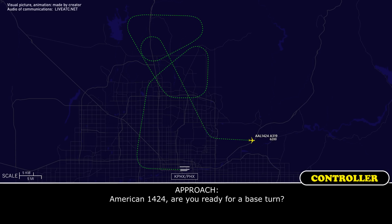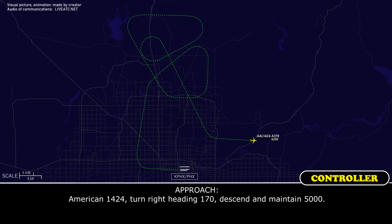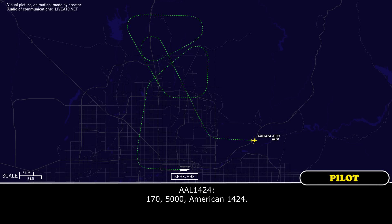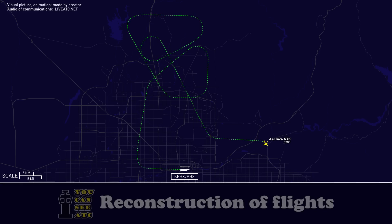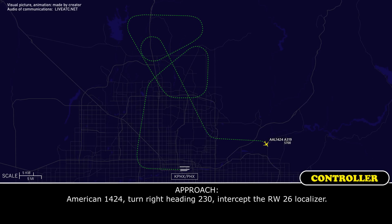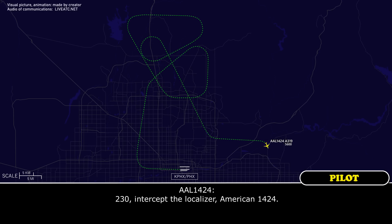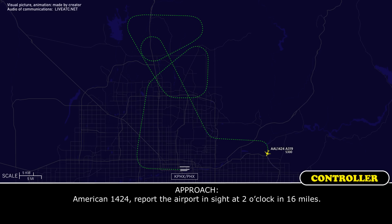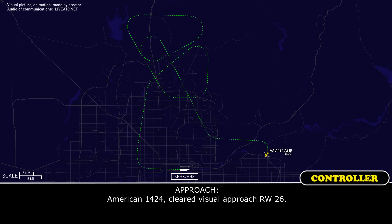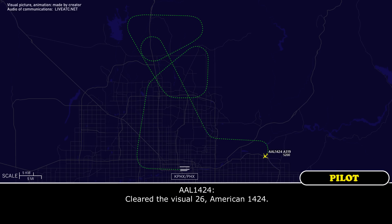American 1424, ready for a base turn? Yeah, we are. American 1424, turn right heading 170, descend and maintain 5,000. 170 and 5,000, American 1424. American 1424, turn right heading 230, intercept runway 26 localizer. 230 for the localizer, 1424. American 1424, report the airport in sight — 2 o'clock, 16 miles. Airport in sight, American 1424. American 1424, cleared visual approach runway 26. Cleared visual runway 26, American 1424.